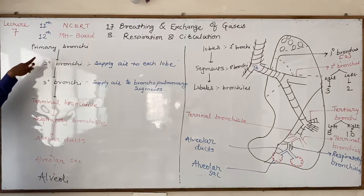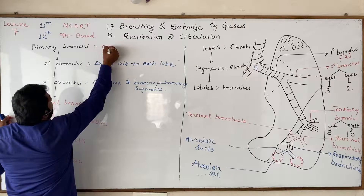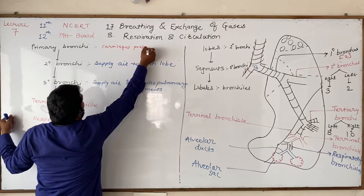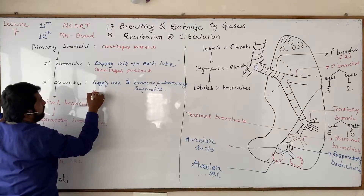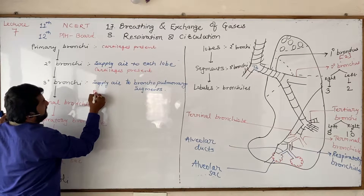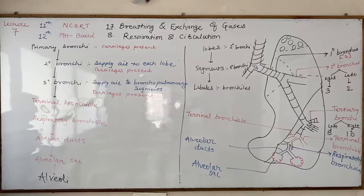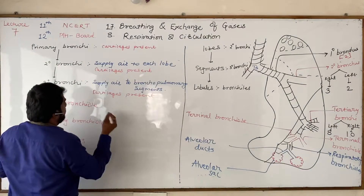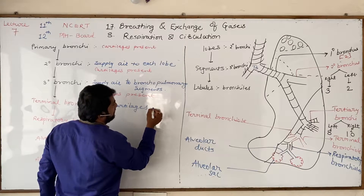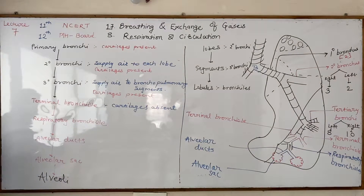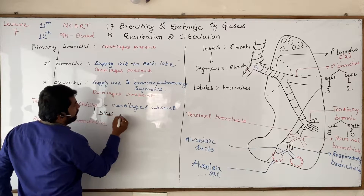Cartilages are present in the primary, secondary, and tertiary bronchi — these are hyaline cartilage. Only the epiglottis is made of elastic cartilage. However, bronchioles are not supported by cartilages — cartilages are absent in bronchioles. Rather, the wall of a bronchiole is made up of smooth muscle.